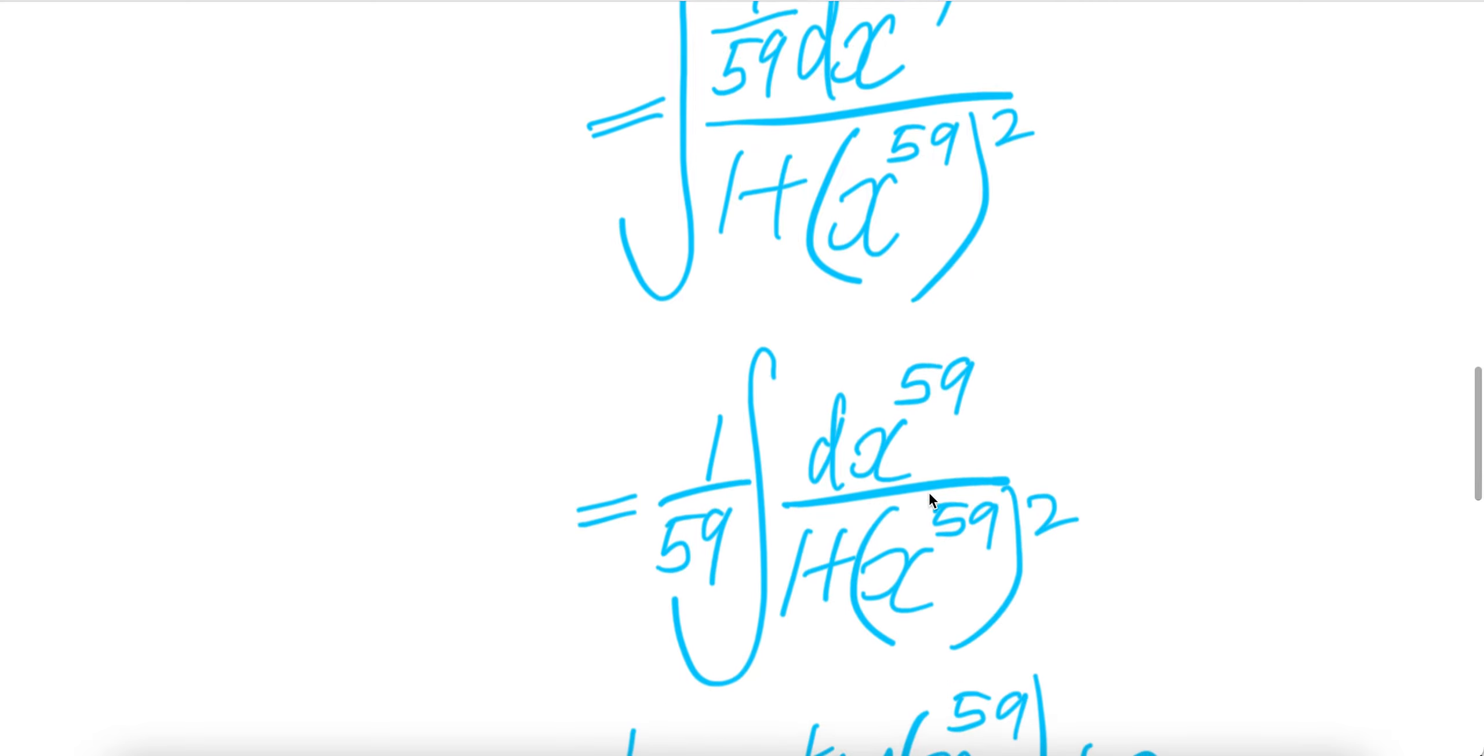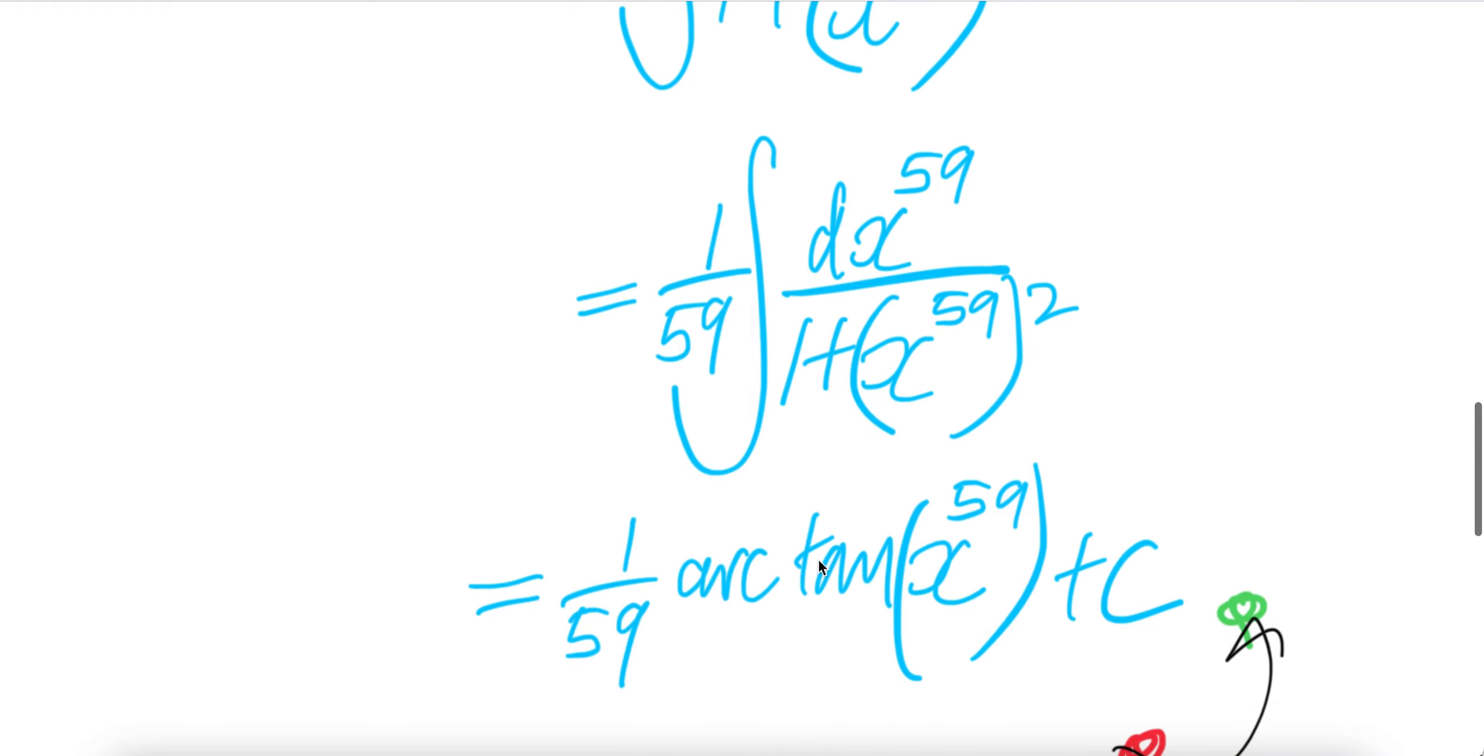Now this is a familiar form. The result of this is arctan x to the power of 59 plus c. Done.